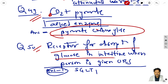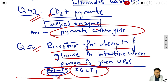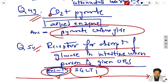Question 50: the receptor for absorption of glucose in the intestine when a person is given ORS is SGLT1. There are many one-word questions. If you observe my first, second, and third parts, you will explore almost 75 plus questions at a single moment of time. Thank you, friends, for being with me. Mistakes may happen in this preparation, but if you have any queries please post in the comment box and I will clarify everything.